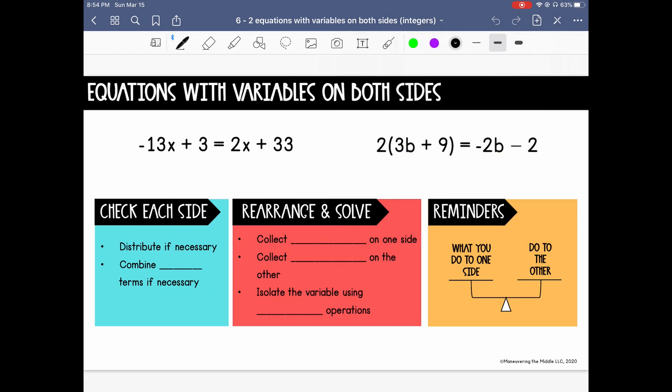Well first, you want to check and on each side, see if you need to distribute anything first or combine any like terms. After you've done that, then we can use our inverse operations to start rearranging the equation. So you're first going to collect your variables on one side of the equation.